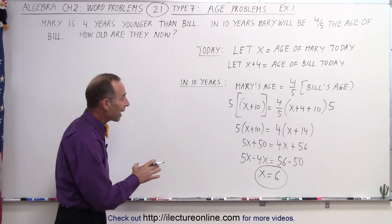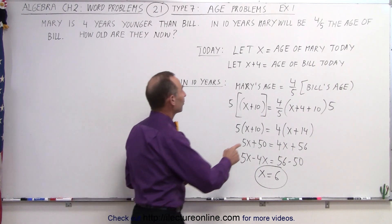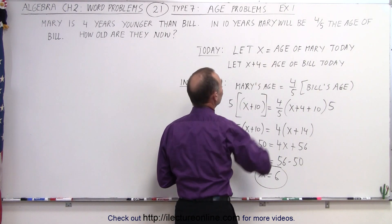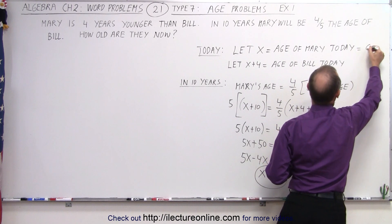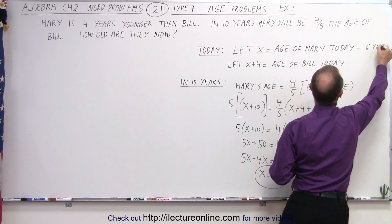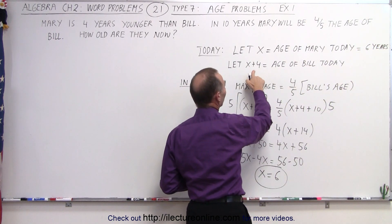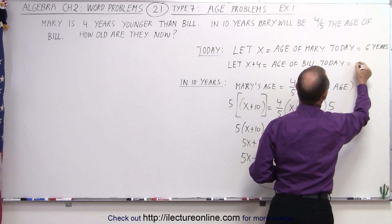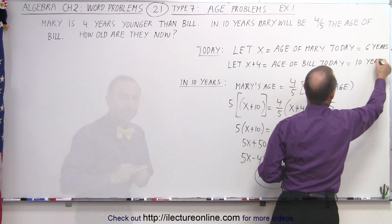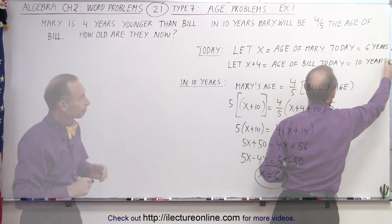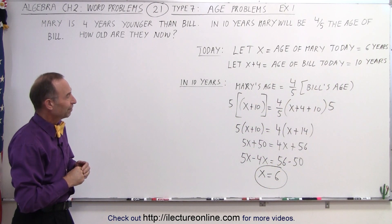We go back and see what x was defined as: x equals Mary's age today. So Mary today is 6 years old, and Bill is 4 years older, so 6 plus 4 equals 10 years old for Bill. And that is how it's done.